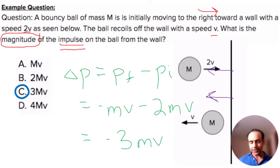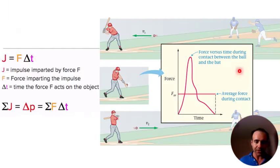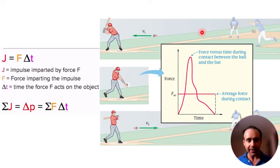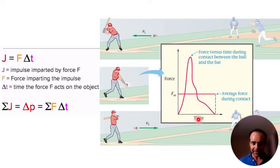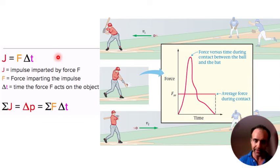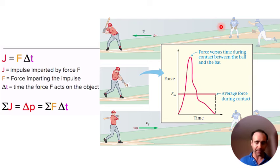As with most physics concepts, there are graphical representations. We can graph force times time on a coordinate axis, which will display the average impulse over that delta T. In real life, for example when a bat strikes a baseball, the force distribution creates a parabolic-looking curve, and the delta T is going to be extremely small — something like 0.01 seconds.